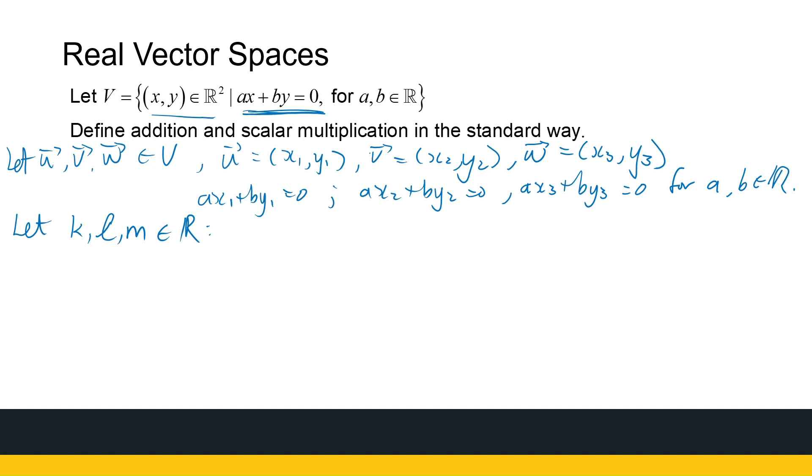My first thing is, is the set closed under addition? So if I've got u plus v, will I end up, we haven't looked at what the addition looks like. Let's just mention that. Standard addition, so that means you add the components x1 plus x2, y1 plus y2. So that's the standard addition. So my question is, is this again back in the set V? Meaning, do I have an ordered pair? Yes, I've got that. Will this condition hold for my ordered pair?